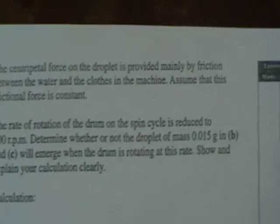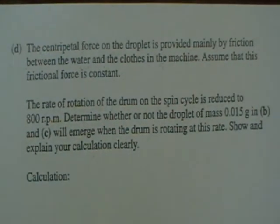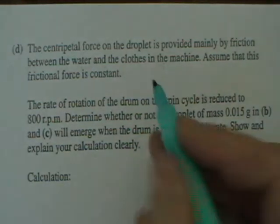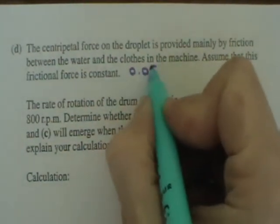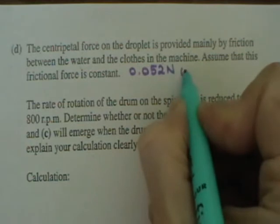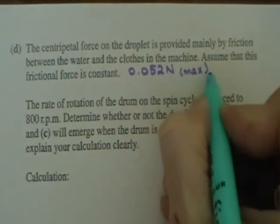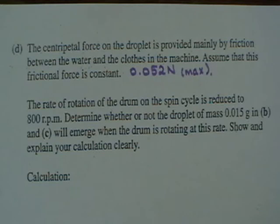The centripetal force on the droplet is provided mainly by friction between the water and the clothes in the machine. Assume that this frictional force is constant. So we know that frictional force has got a value of 0.052 newtons maximum because we've calculated that in part B.